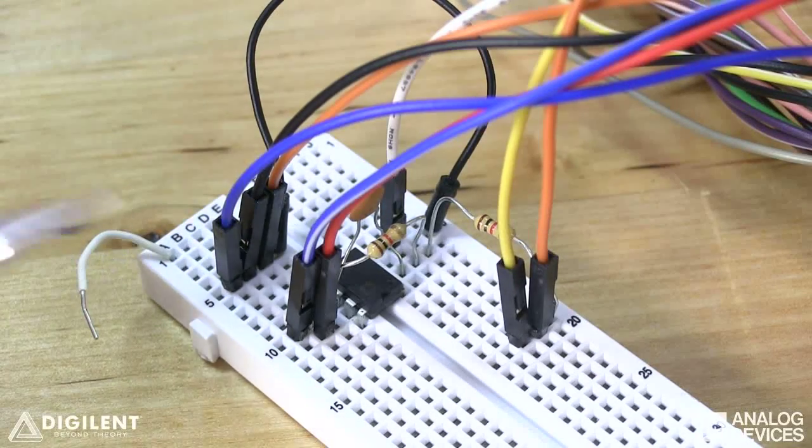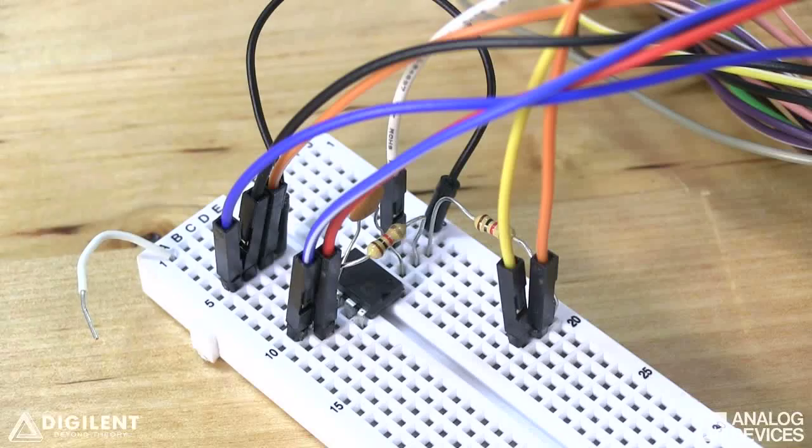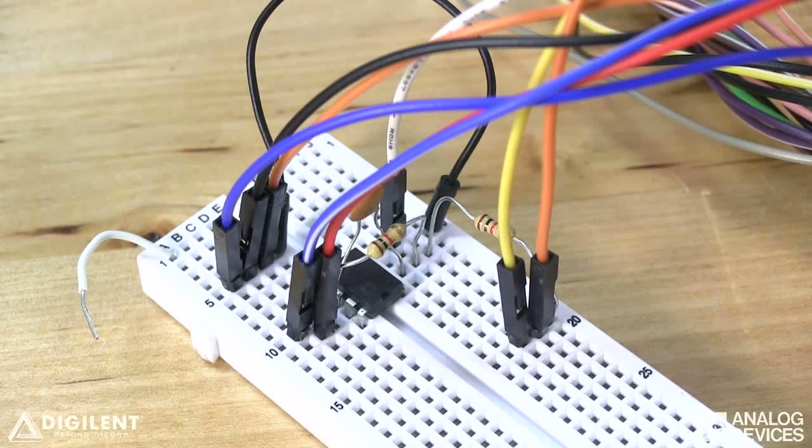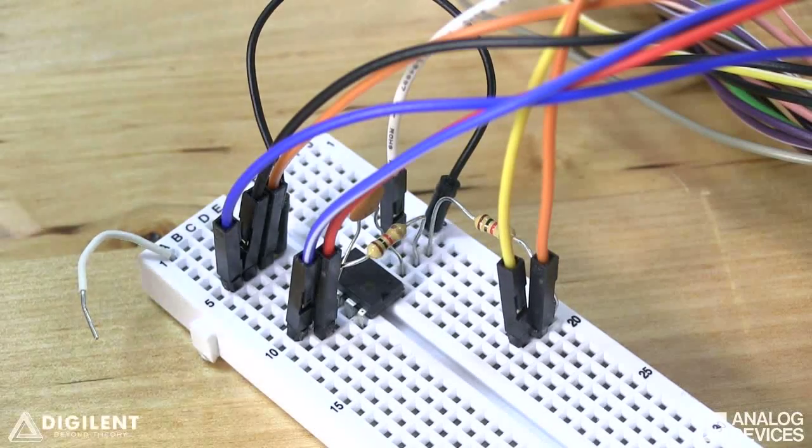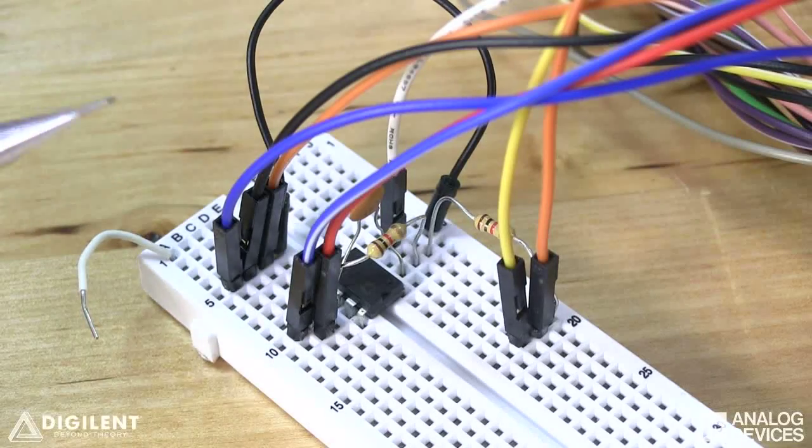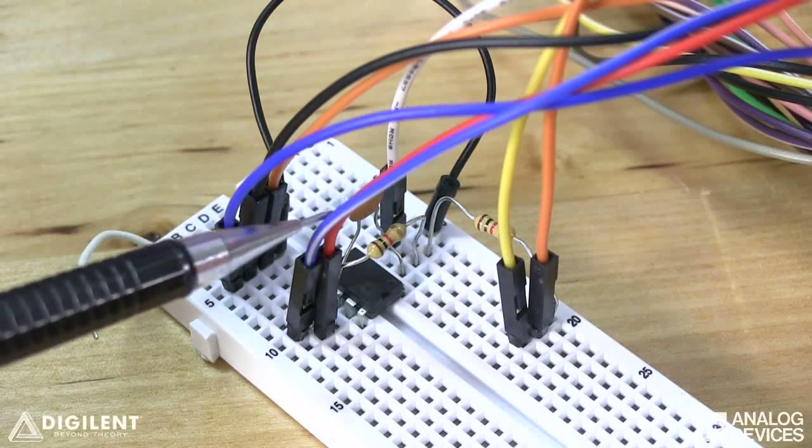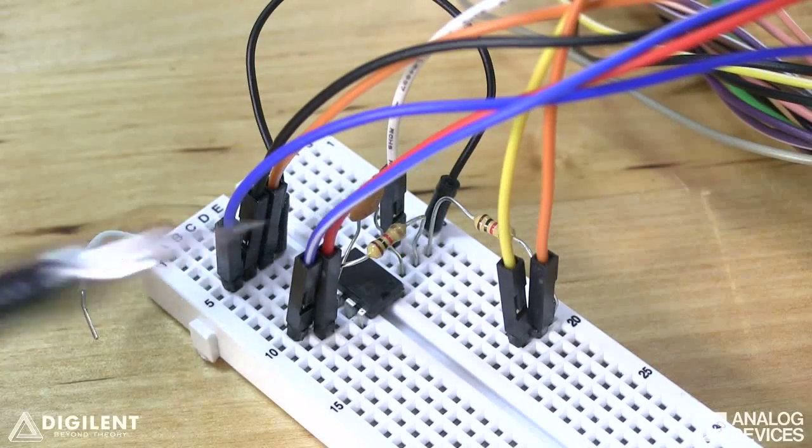Now this circuit has the same magnitude response as our previous passive circuit. However, it's an inverting voltage amplifier, so there's a sign change on the output. I'm accounting for that sign change by reversing the leads on channel two of the oscilloscope.